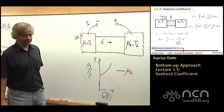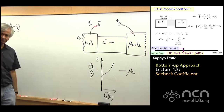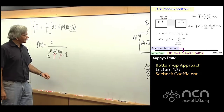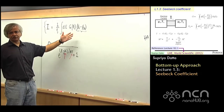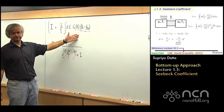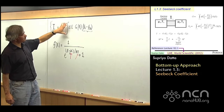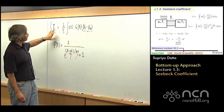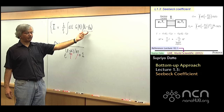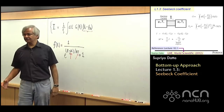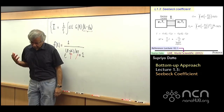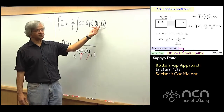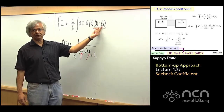The point I made is that although it's a new phenomenon, one that we haven't discussed before, the basic framework is already there. Namely, this basic expression that we had obtained earlier: current depends on F1 minus F2. So although we are talking of temperature-driven current, it's really driven by the difference between the two Fermi functions.